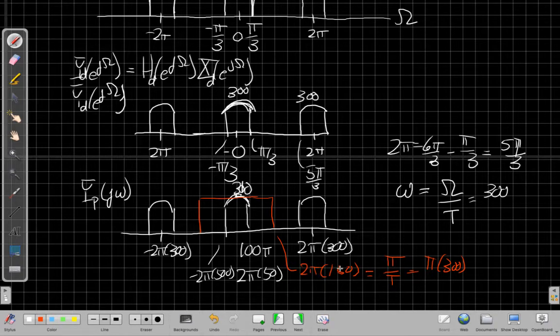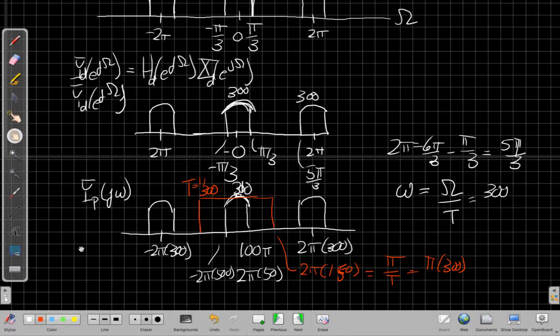So when I pull the 2π up front, I have 2π times 150 with a gain of T, which is 1/300. So those cancel it all out.